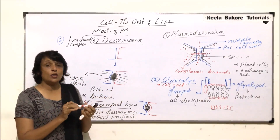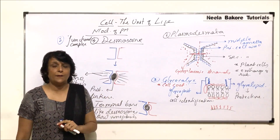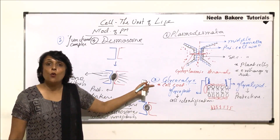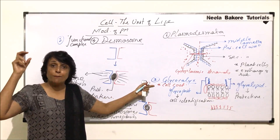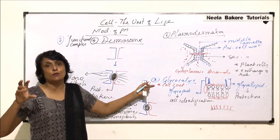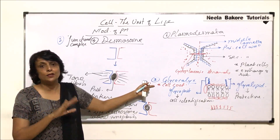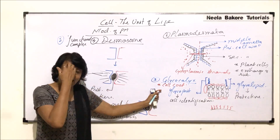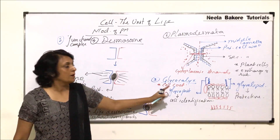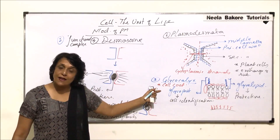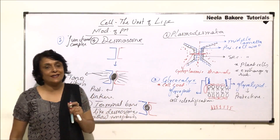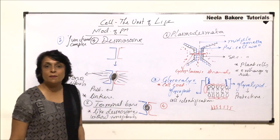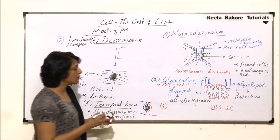The word glycocalyx also appears when discussing bacteria, but in bacteria it refers only to the gelatinous capsule found outside the cell — that has nothing to do with the plasma membrane. Here we are talking about glycocalyx in respect to the actual phospholipid-protein plasma membrane, where oligosaccharides are attached. The next modification of the plasma membrane is known as a sheath.